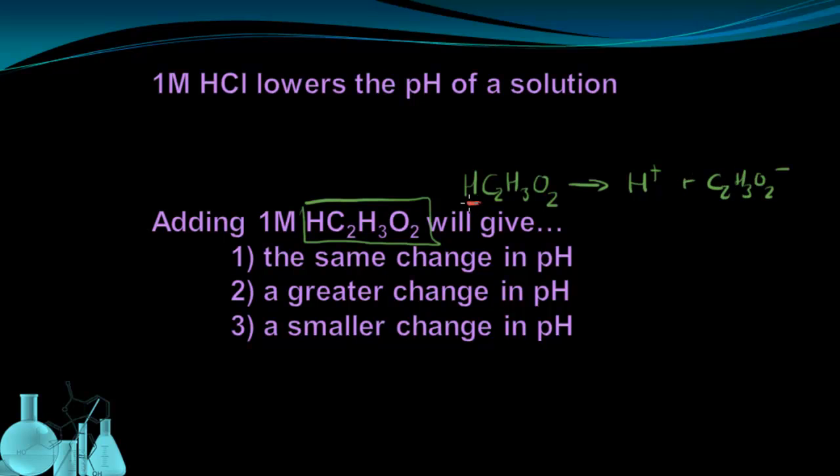So for every one molecule of acetic acid, we get one H-plus ion, according to the way I have this equation written. And if this were true, you should expect it to have the same change in pH because the same concentration of acetic acid as HCl is going to give me the same number of hydrogen ions produced. So I should have the same lowering of pH.